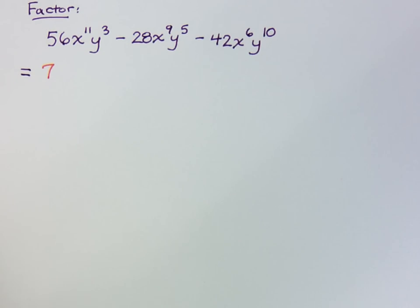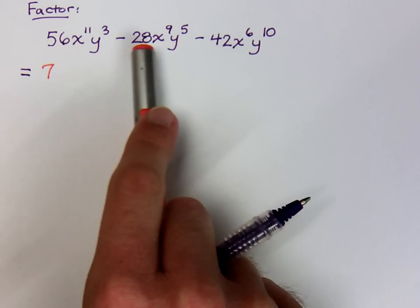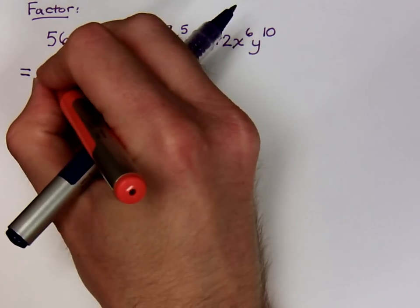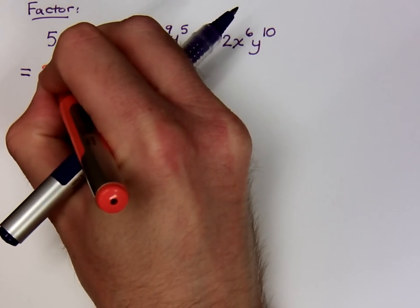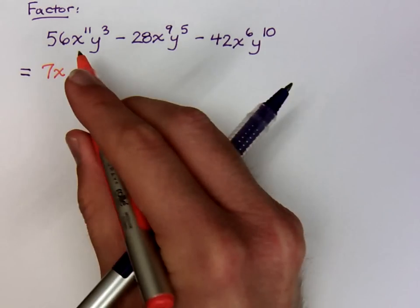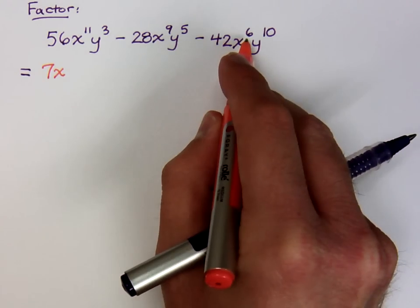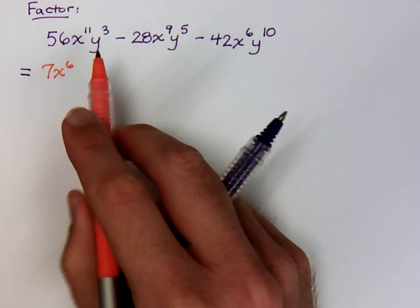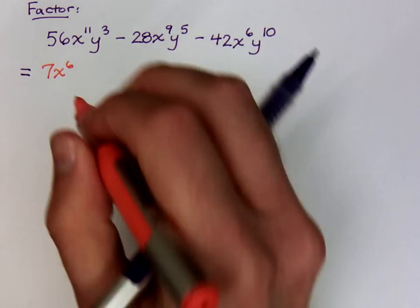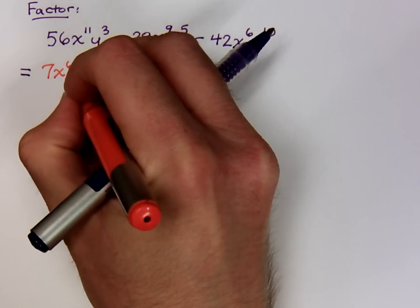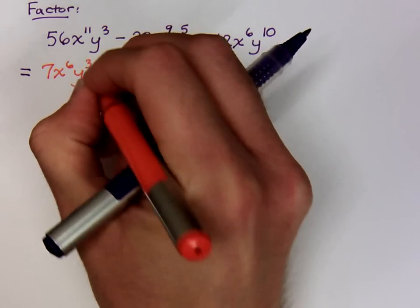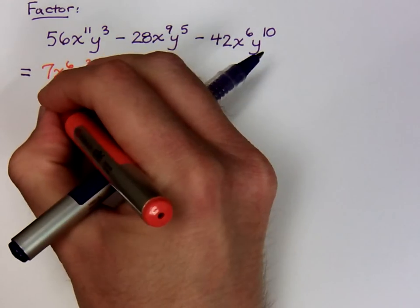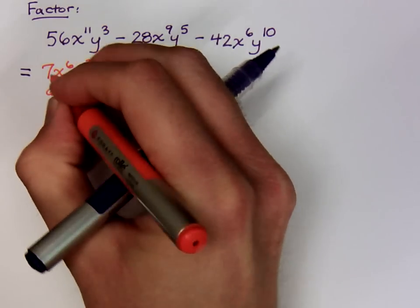If I look at 56, 28, and 42, one of the things that comes to my mind is that these guys are all in that column of the multiplication tables with the sevens. Seven goes into all these guys. So let's go ahead and start there. We can factor out the common factor of seven. What else? You see that all these guys have x's, and as we saw in the last video, the amount of x you can take out, or the amount of any variable, is going to be determined by the smallest amount that you have, which is six.